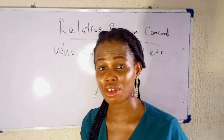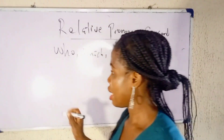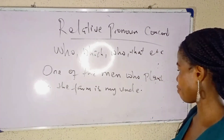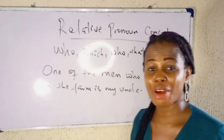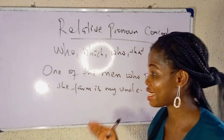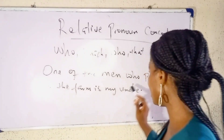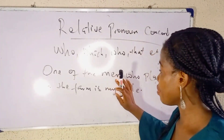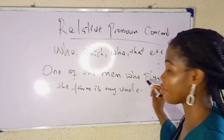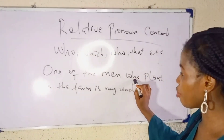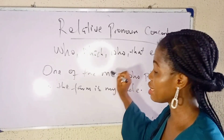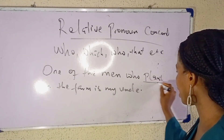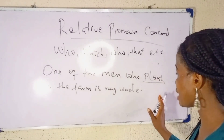Let's look at an example of a sentence that contains a Relative Clause: 'One of the men who plants in the farm is my uncle.' Relative Pronoun Concord simply states that when you have a Relative Pronoun in a sentence, the verb that comes after the Relative Pronoun is going to agree with the noun or pronoun that is before the Relative Pronoun. Now, we have 'plants' here, which is a verb.